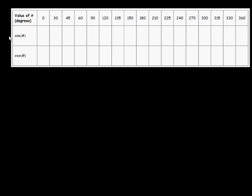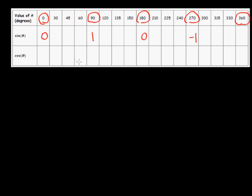The graph of y equals sine theta between 0 and 360 degrees has five key points. We consider those five key points to be when we have degree values of 0, 90, 180, 270, and 360 degrees. So for y equals sine theta: sine of 0 degrees is 0, sine of 90 degrees is 1, sine of 180 degrees is 0, sine of 270 degrees is negative 1, and sine of 360 is 0 as well — that's when we've rotated a full circle and come back to where 0 degrees is located.